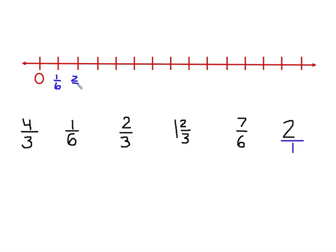And you would have two sixths, three sixths, and you would continue on all the way until the end of your number line, until you have enough values that you'll be able to put all of your points on that number line.